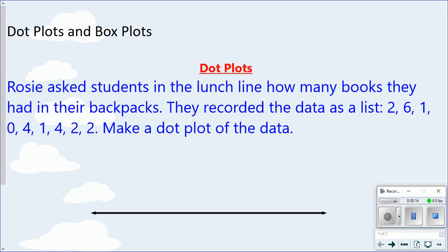Rosie asked students in the lunch line how many books they had in their backpacks. They recorded the data as a list: 2, 6, 1, 0, 4, 1, 4, 2, 2. We're asked to make a dot plot of that data. For a dot plot, the first thing you want to do is create a number line that goes from your smallest value to your largest value. Our smallest value is zero and our largest is six.